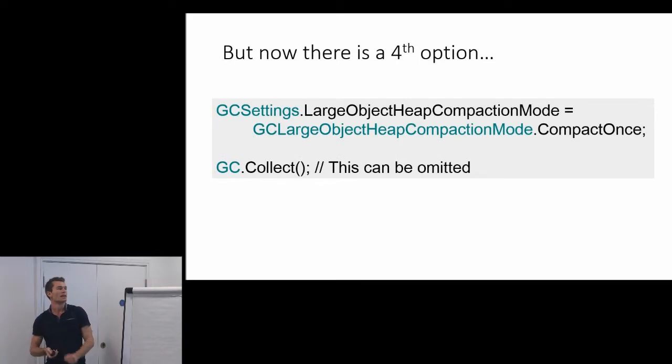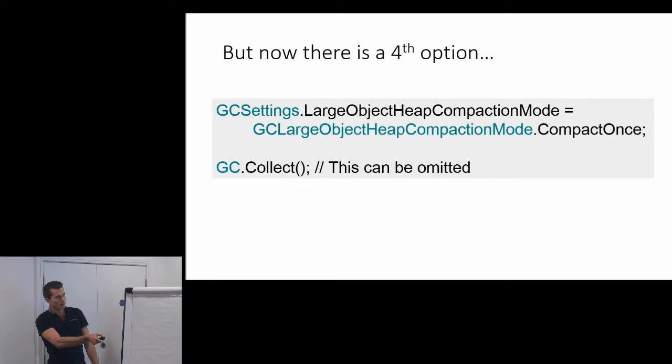However, now in .NET 4.5.1, there's another option, whereby you can tell the garbage collector that next time it collects the large object heap, it should do a compaction. It's just a one-off, so after this compaction's happened, your application will keep going as it did before, and to do this you simply put in that first line there, and if you want to do the collection immediately then you can put in this line as well.